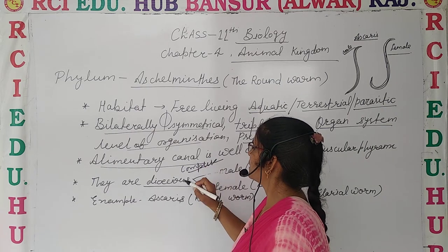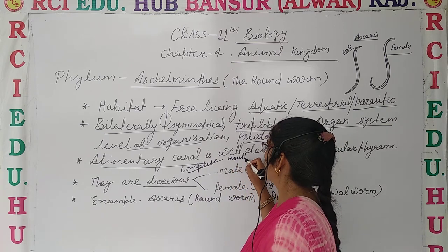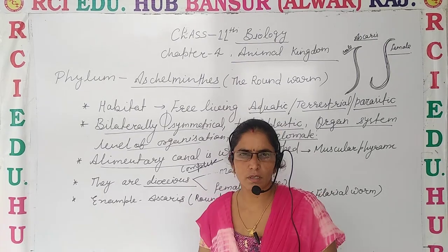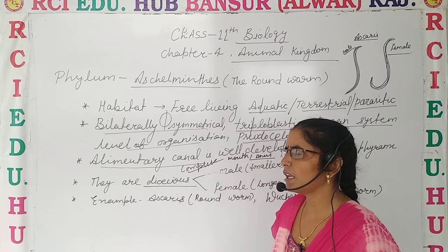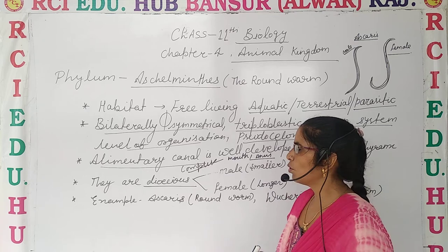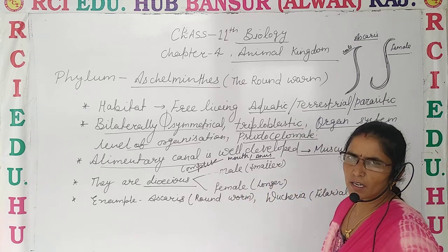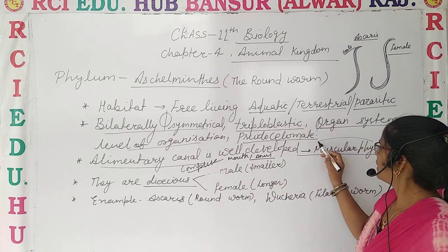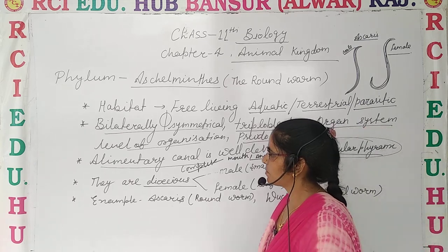Here, a complete digestive system is seen because it has two pores — mouth and anus. An incomplete digestive system has only one pore. The alimentary canal here is well developed with two pores, and it also has a muscular pharynx — this is a peculiar feature of Aschelminthes.